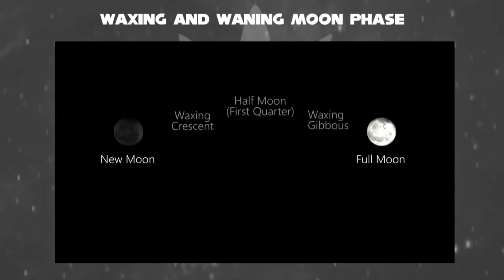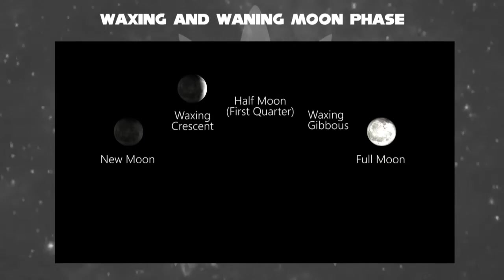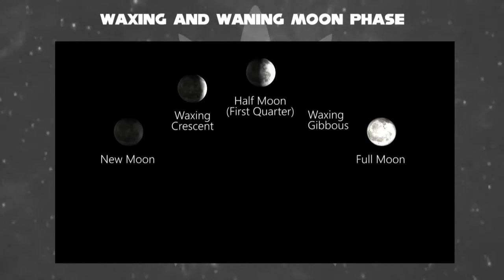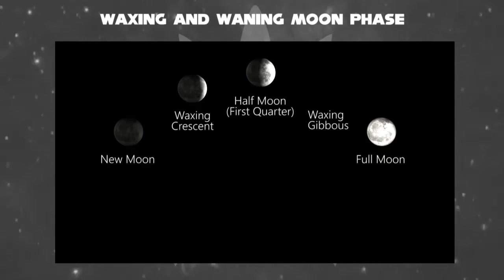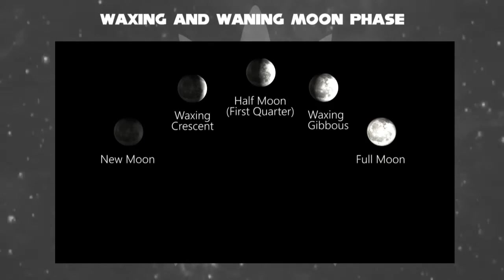We can divide waxing into three subdivisions: first is the waxing crescent, second is the half moon, typically called the first quarter, and third is the waxing gibbous, in that order.